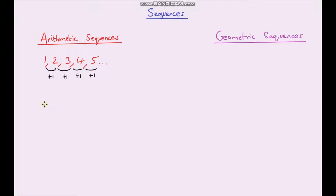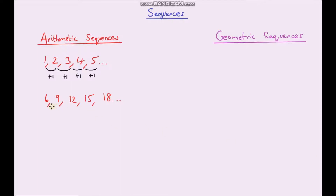Another example of an arithmetic sequence: let's say we start at six, then nine, twelve, fifteen, eighteen, and so on. To go from six to nine I'm adding on three, and also to go from nine to twelve, twelve to fifteen, and fifteen to eighteen — I'm adding on three each time.